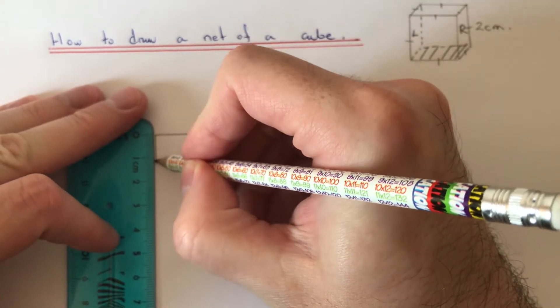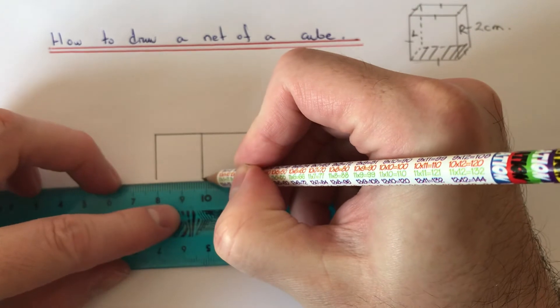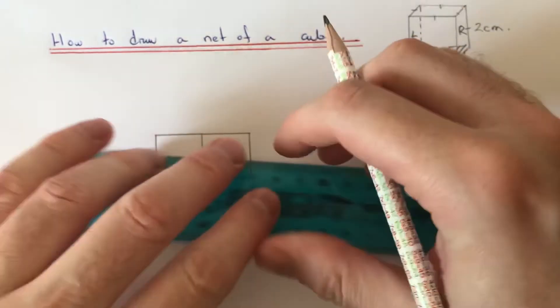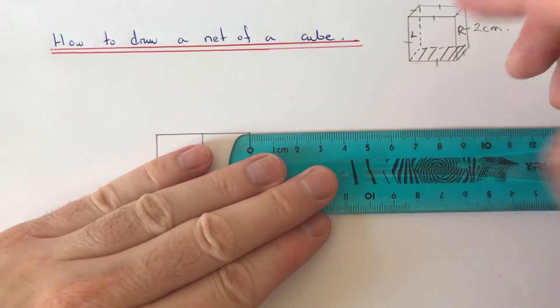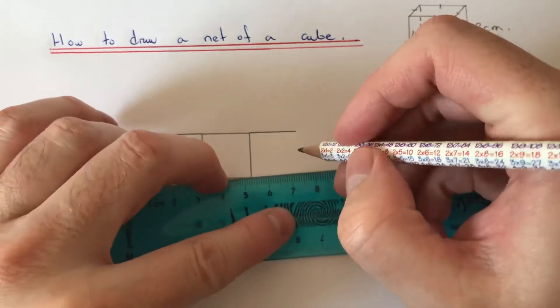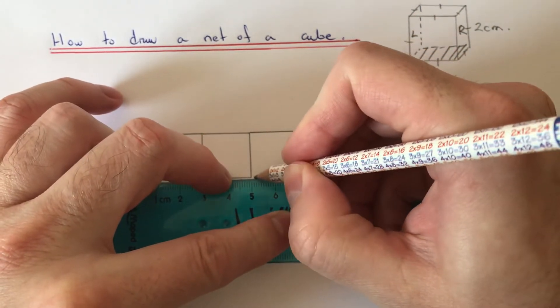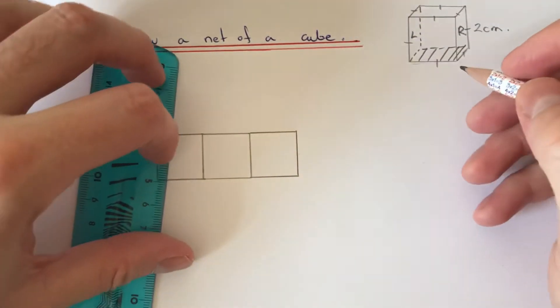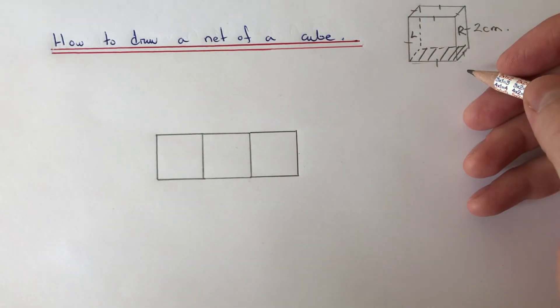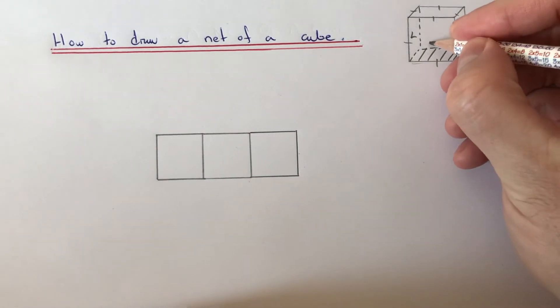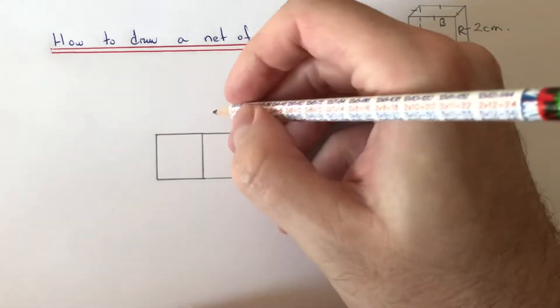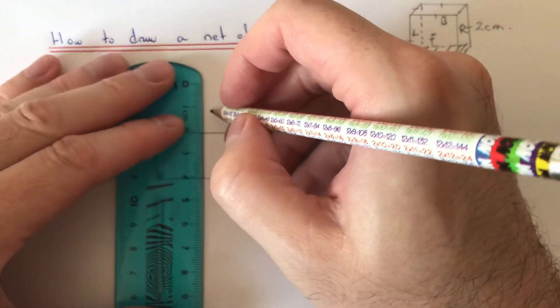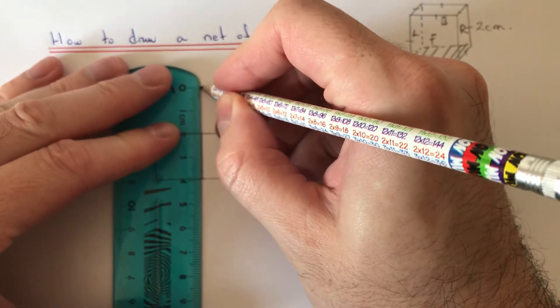Next, we can do the front and the back face. Again, it's just two centimeters by two centimeters.